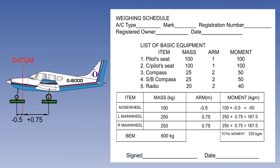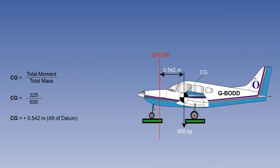We now have the basic empty mass and total moments of our aeroplane. The next step is to calculate the basic centre of gravity from the total basic empty mass and the total moment. The centre of gravity is found by dividing the total moments by the total mass. The total moment is 325 kgm and the total mass is 600 kg, establishing that the centre of gravity is plus 0.542 m aft of datum.